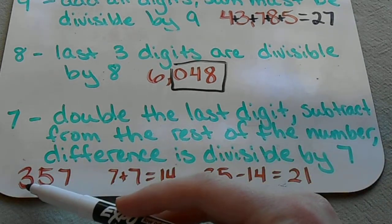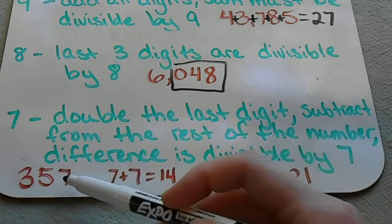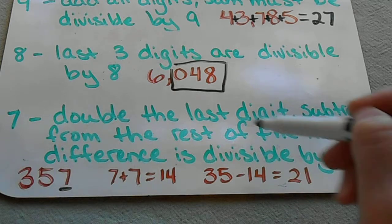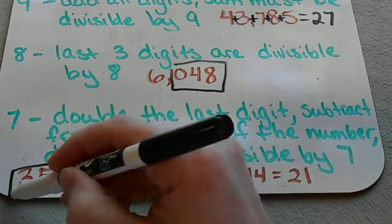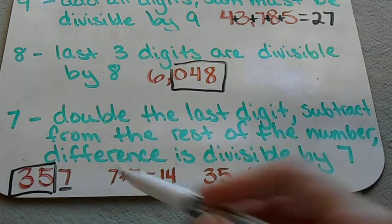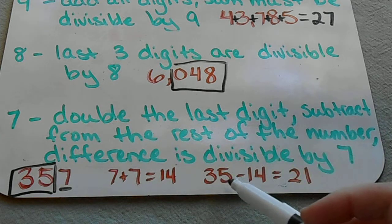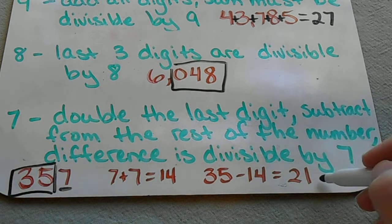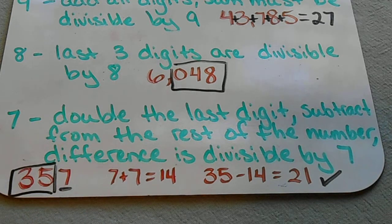We're going to check 357. I'm going to take that last digit and double it, and that gives me 14, and then I'm going to subtract 14 from the remainder of my number, 35. So 35 minus 14 gives me 21, and 21 is divisible by 7.